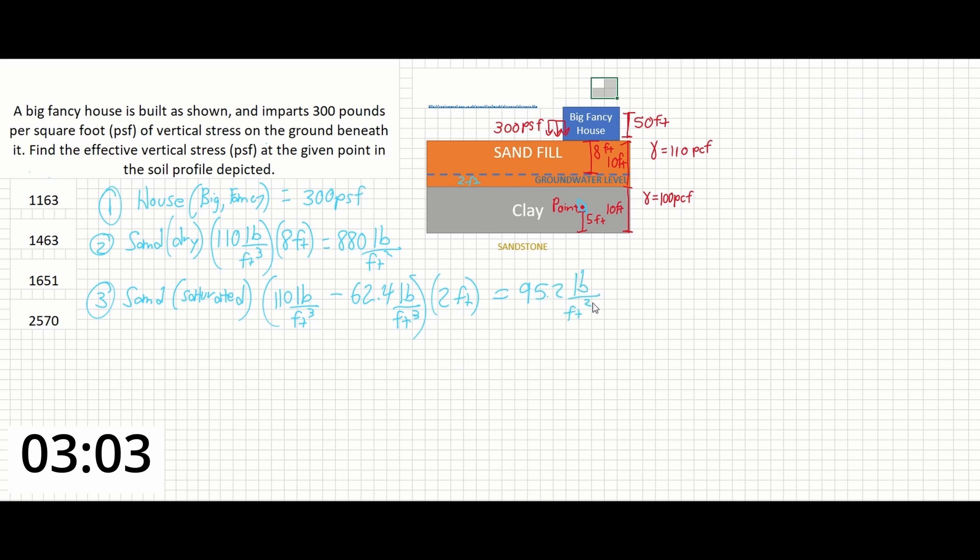Finally, we can solve for the effective vertical stress in the clay up to the given point. If the total depth of clay is 10 feet and the point is 5 feet above the bottom of the clay layer, then the depth of clay remaining will be 5 feet.